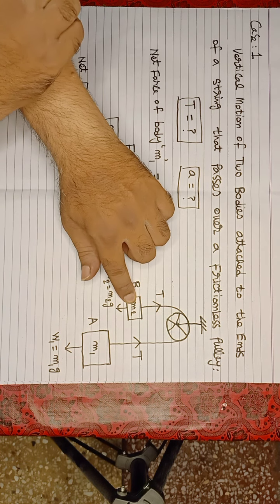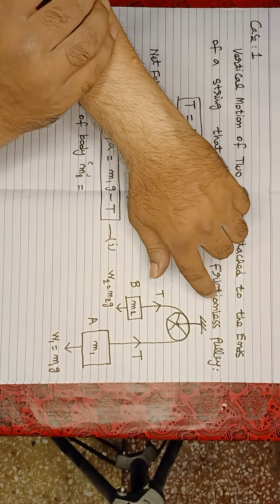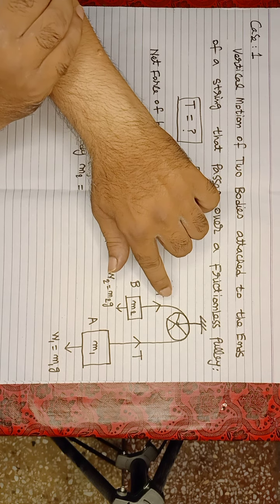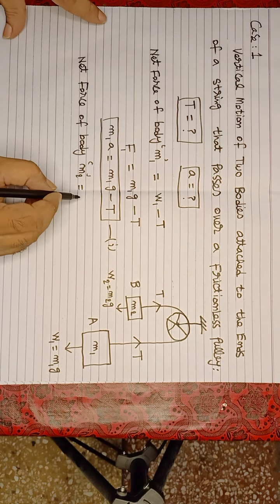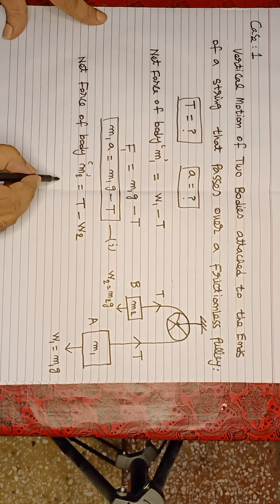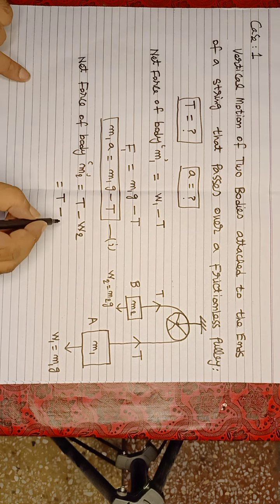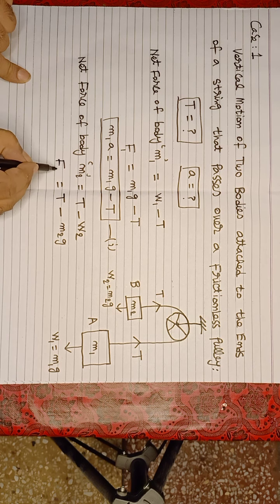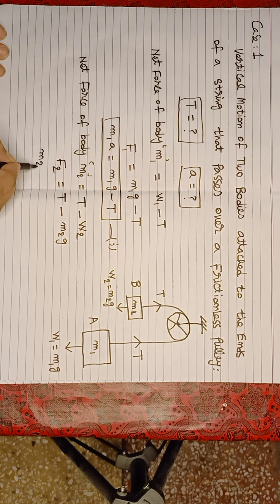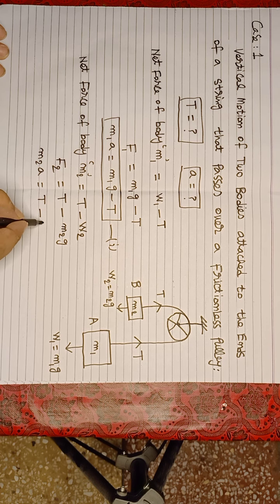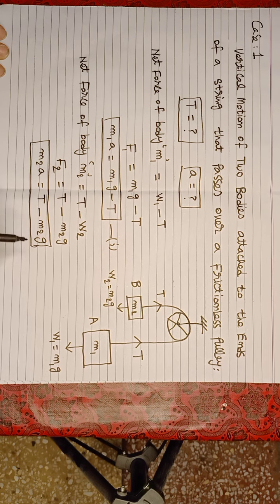M2 is the light body. Its weight is light, so tension overcomes it and the body moves in the upward direction. So net force is calculated by T minus W2. In place of W2, we write M2G. According to Newton's second law, F equals MA. So we write M2A equals T minus M2G. We name this equation number 2.